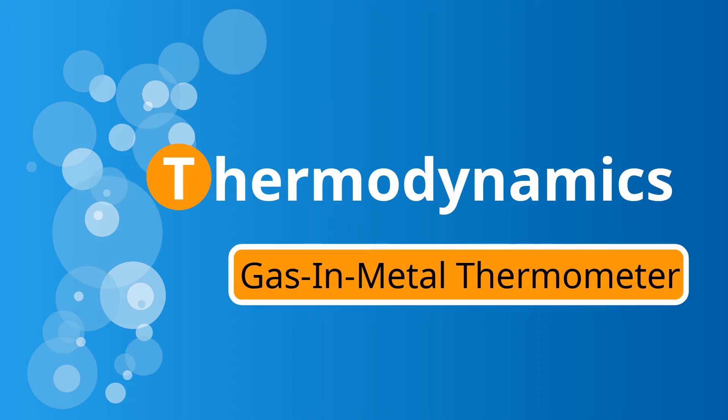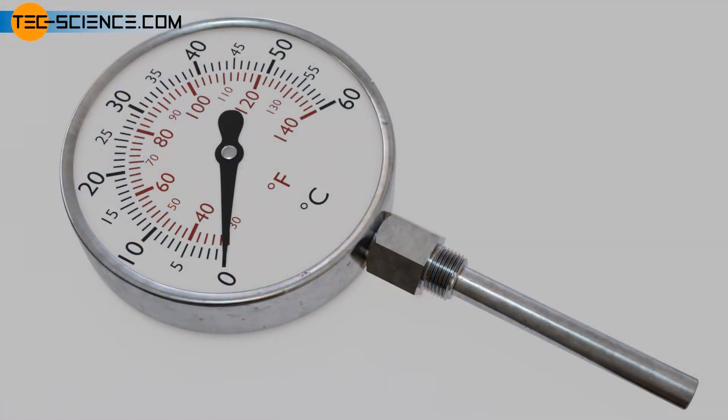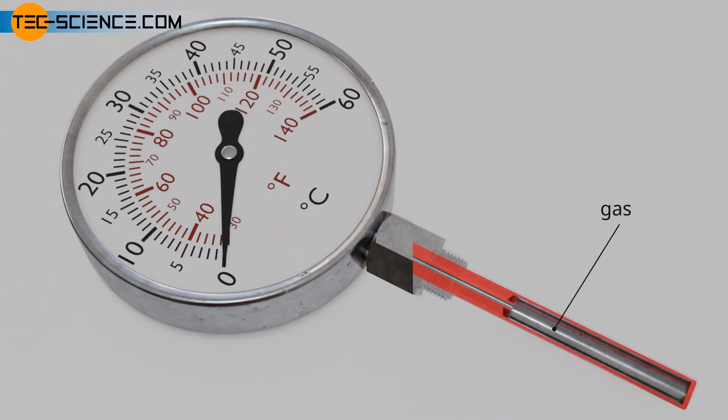In this video we will deal with the design and operation of a gas-in-metal thermometer. So let's get started. In gas-filled thermometers, also called gas thermometers or gas-in-metal thermometers, a gas is used as the thermometric fluid instead of a liquid as it is in liquid-in-metal thermometers.